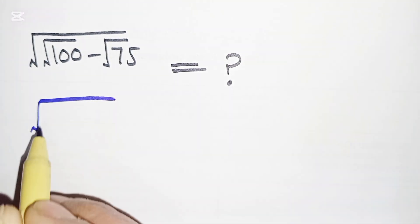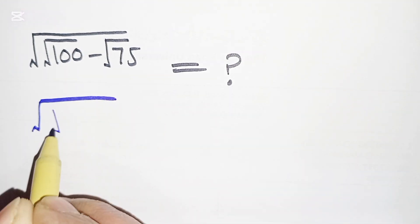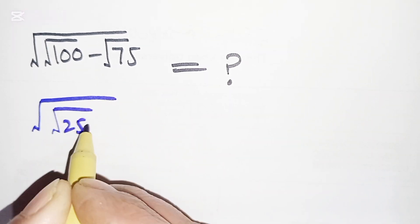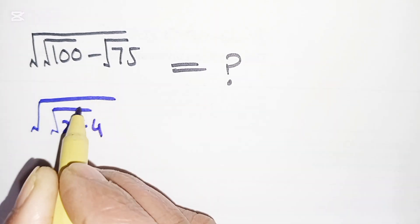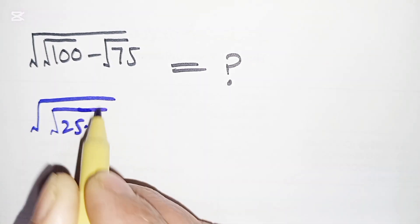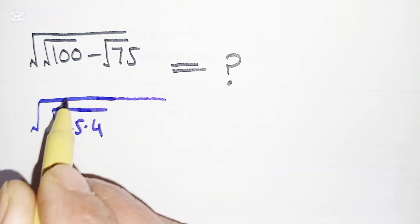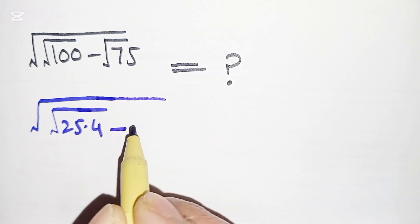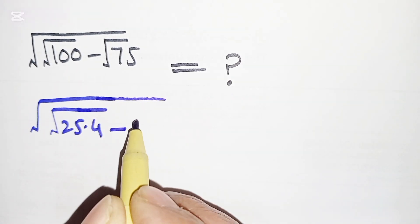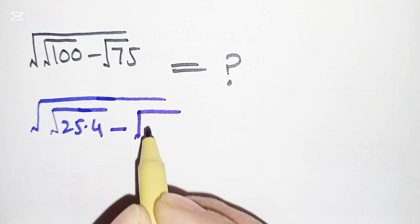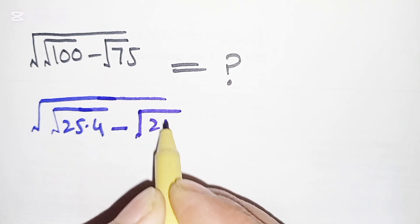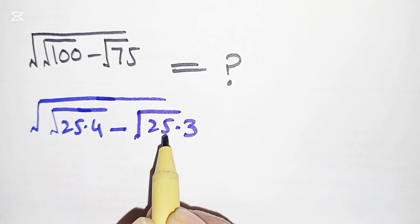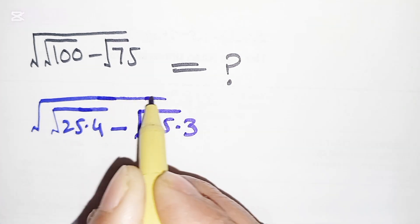√100 can be written as √(25 × 4), since 25 multiplied by 4 is equal to 100. Then minus: √75 can be written as √(25 × 3), since 25 multiplied by 3 is equal to 75.